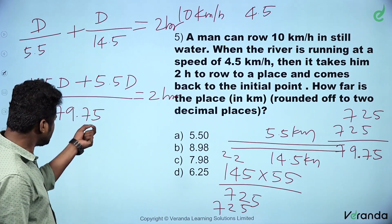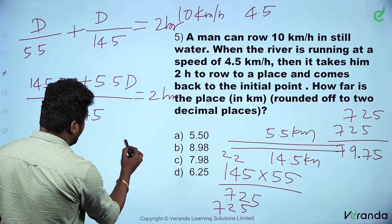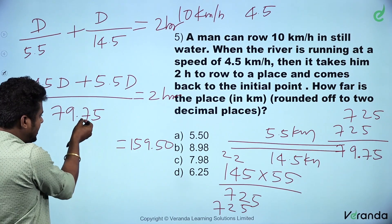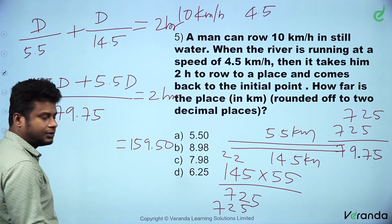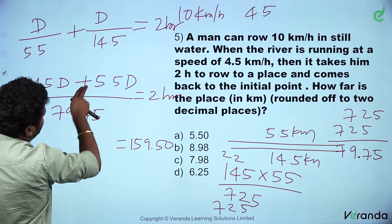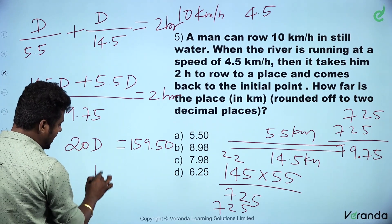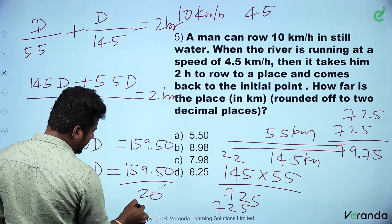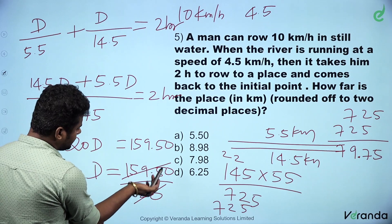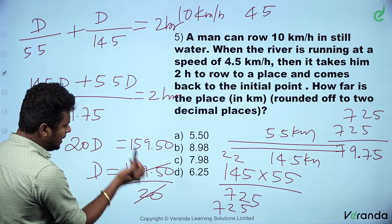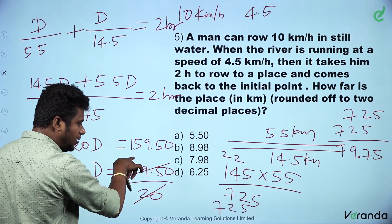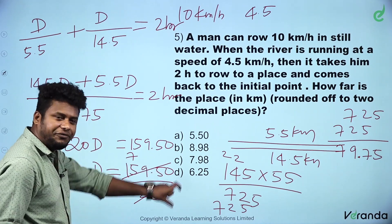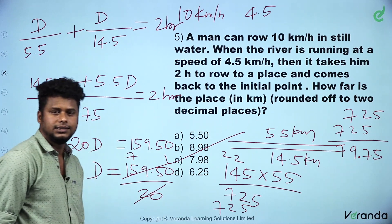So distance D equals 159.50 divided by 20. Cancelling, D is approximately 7.98 km. The exact answer rounded to 2 decimal places is 7.98. Option C: 7.98.